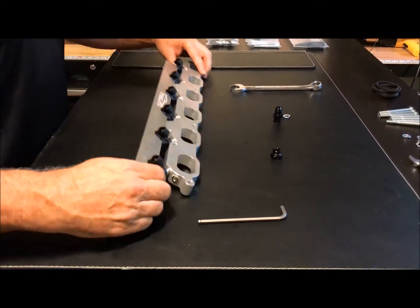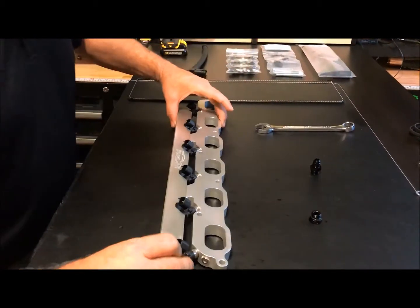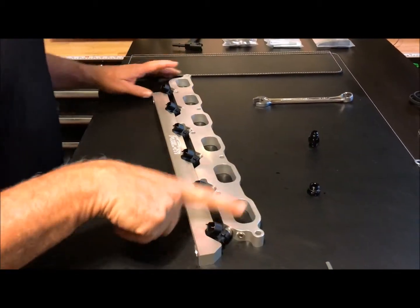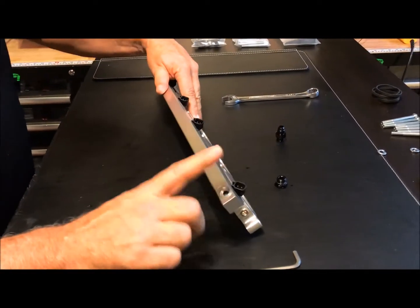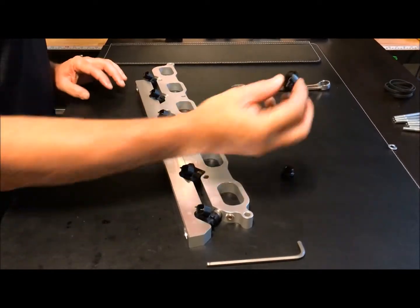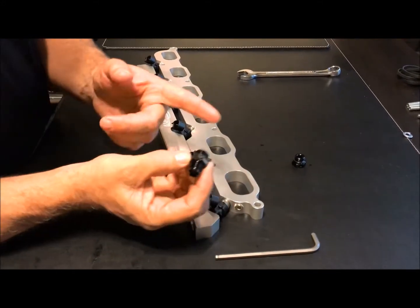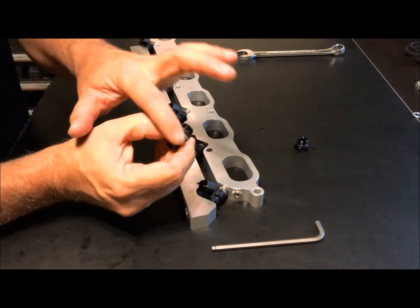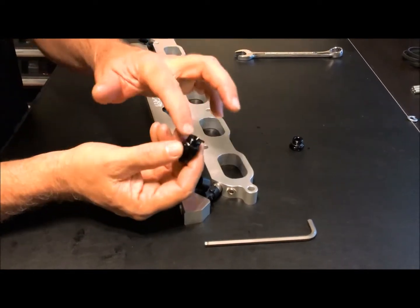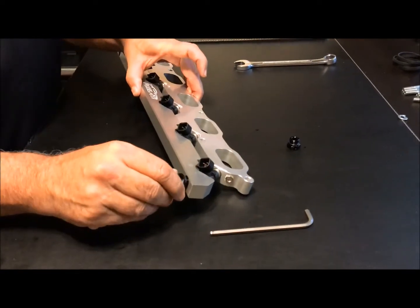So, this is the intake or excuse me, the supply side of the rail. So, here's Cylinder 6. Here's Cylinder 1. And, here's the supply side. On the supply side, we do the adapter. So, we've got the Dash 6 AN fitting here and then, of course, the threaded O-ring adapter. So, go ahead and thread that in.